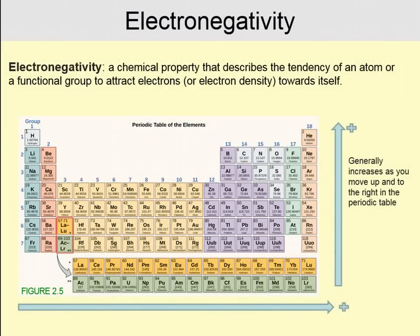Polar covalent bonds occur when two molecules share electrons and those molecules have different electronegativities. Electronegativity is a chemical property that describes the tendency of an atom or a functional group to attract electrons or electron density toward itself. Going to the right and up on the periodic table is a general trend toward an increase in electronegativity, except for the noble gases that have full electron shells. Fluorine is the most electronegative element — it wants electrons more than any other. Oxygen, right next to it, is also pretty electronegative.